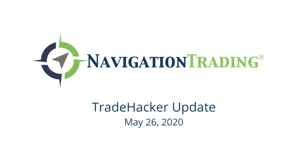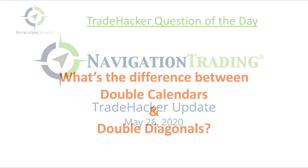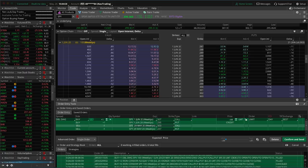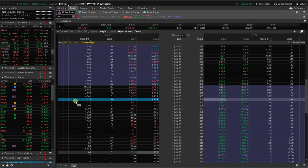What's up, Trade Hackers? Welcome to today's update. Today's Tuesday, May 26th. Hope everybody had a great long Memorial Day weekend. Back in action. First trading day of the week, starting with the Trade Hacker question of the day. Got this question in our community today: what's the difference between double calendars and double diagonals? Let's go to the platform and take a look at an example to help explain what the difference is.